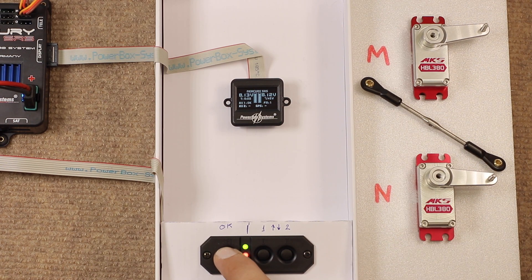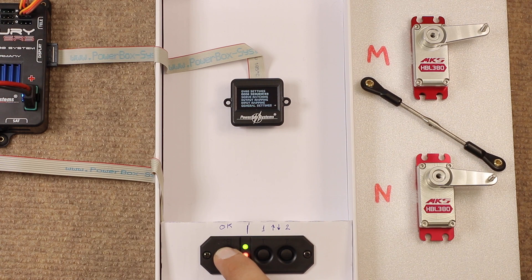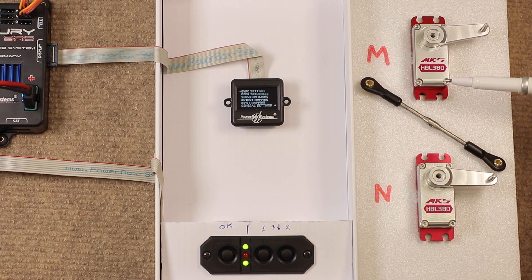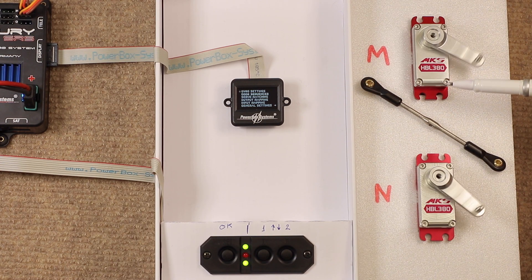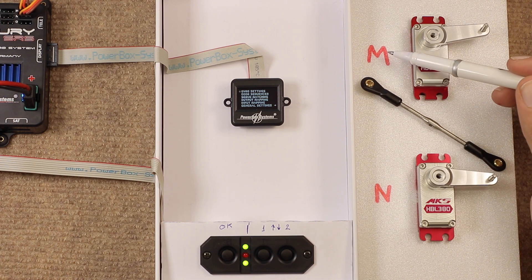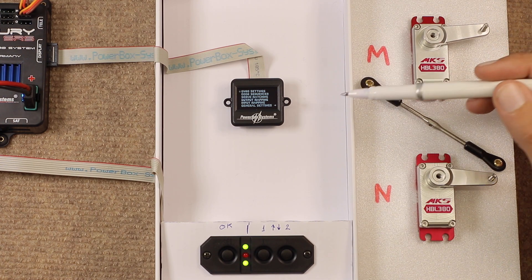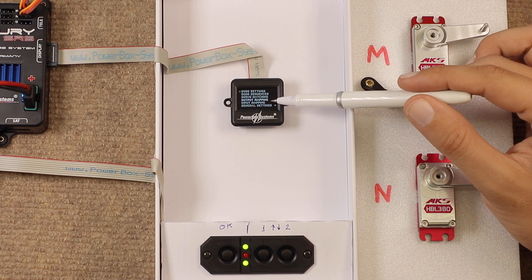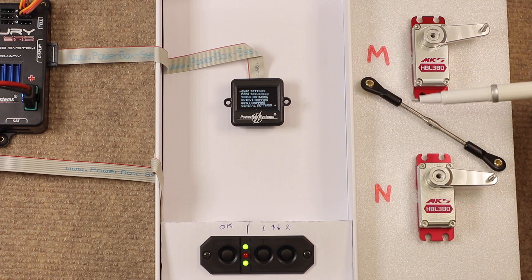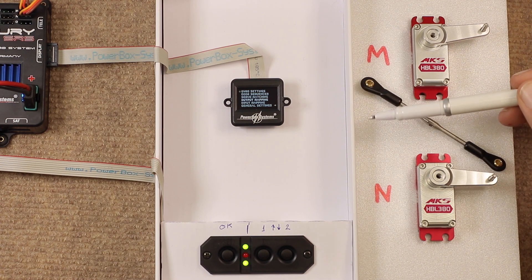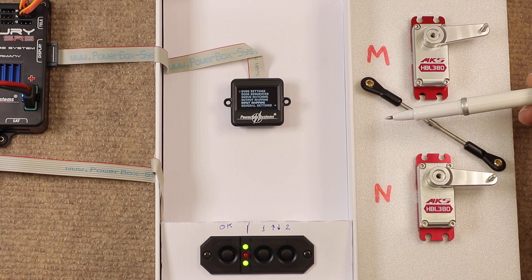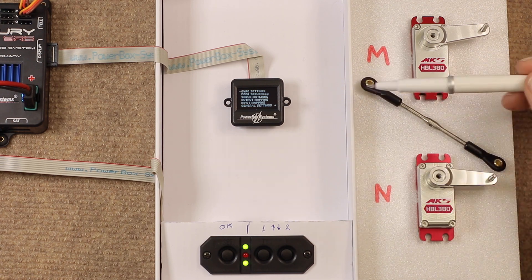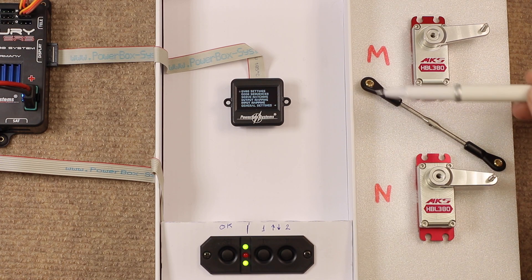So, if we go into the menu, now these two servos are already connected to my rudder channel, as you can see, in outputs M and N. I've programmed those previously, via the input mapping and output mapping. However, if you have queries on how to do that, please see the link below for the video on how to set up those channels via Mercury or any other power box. This video, we're only going to show you how to do the servo matching.